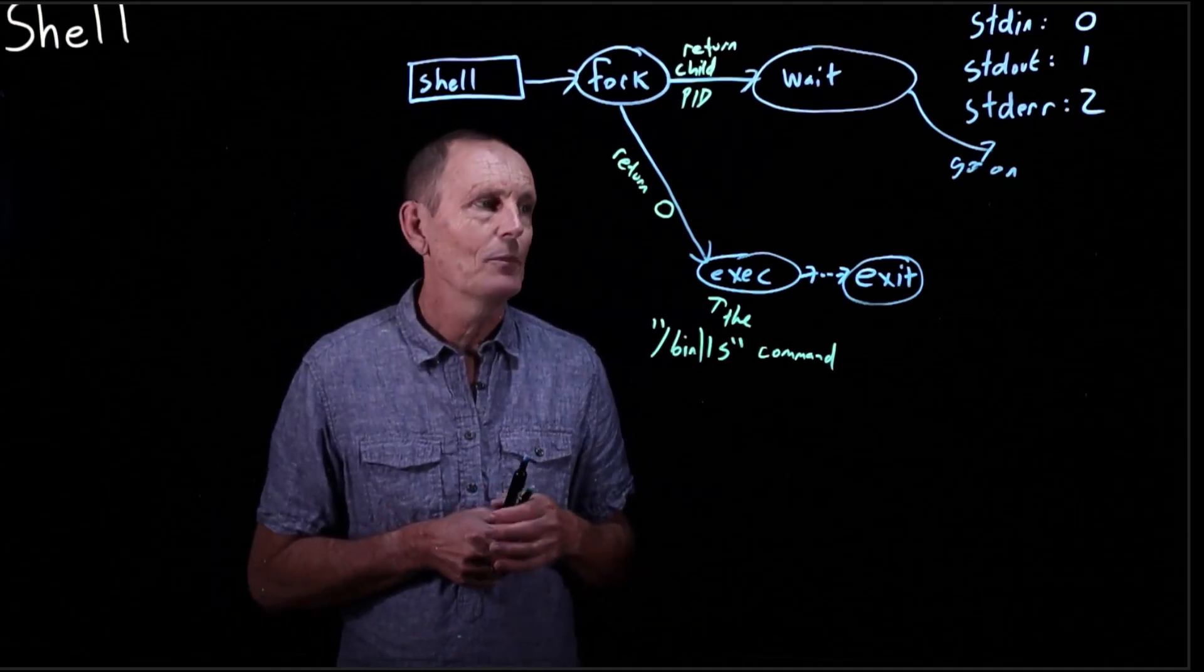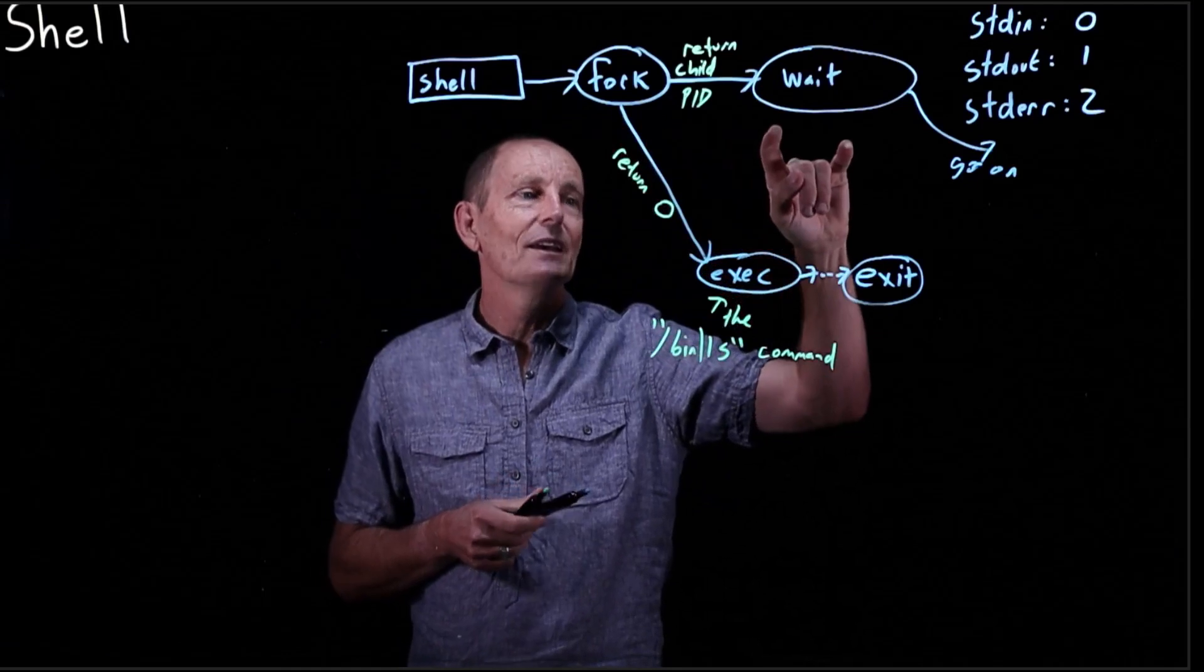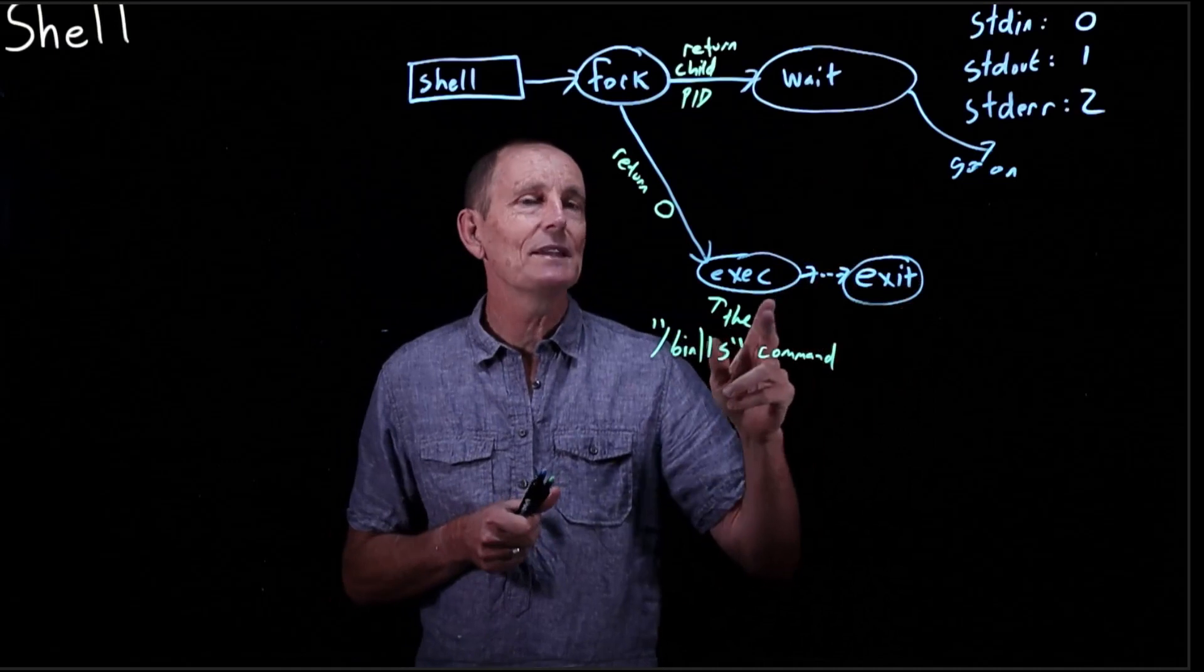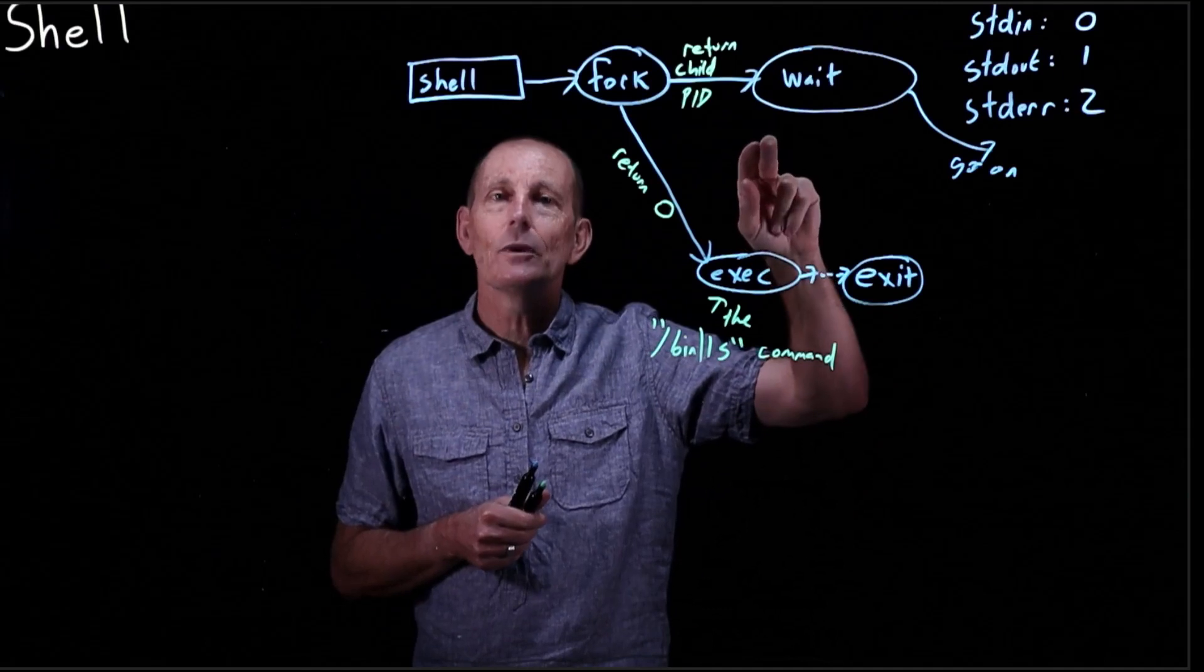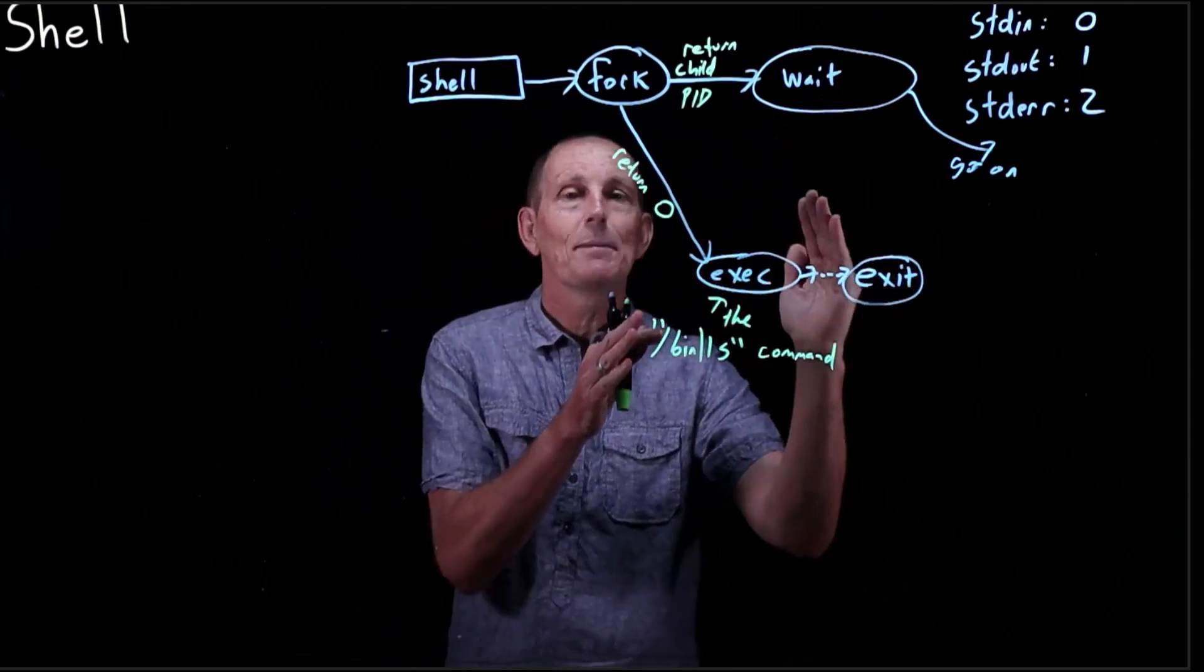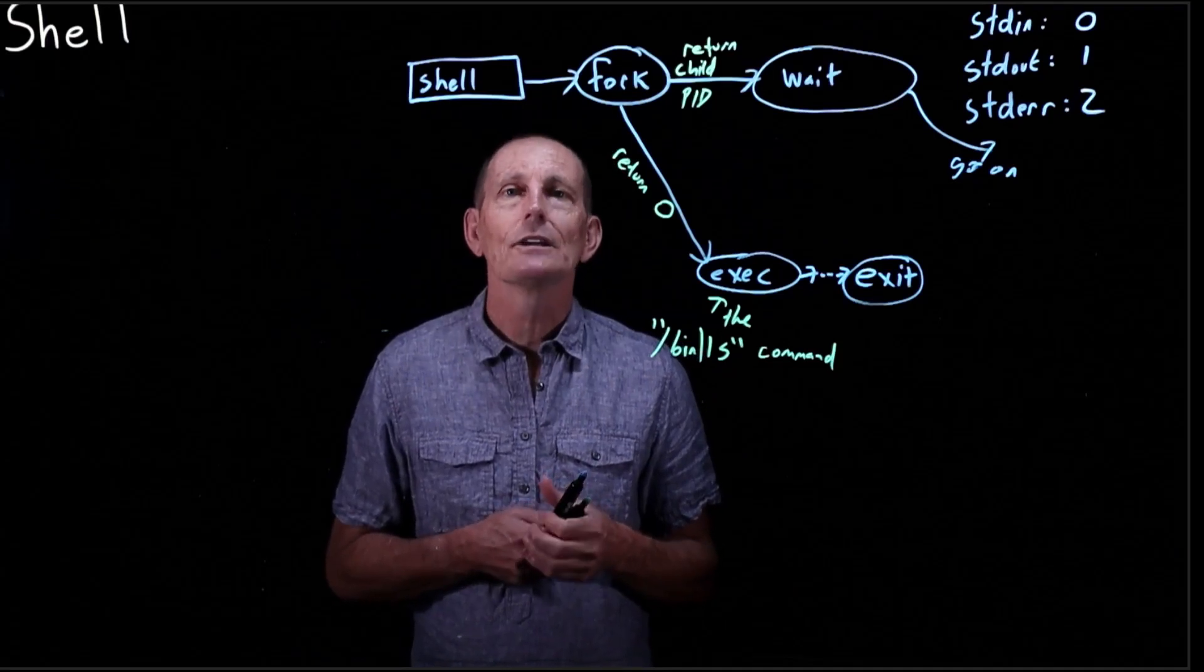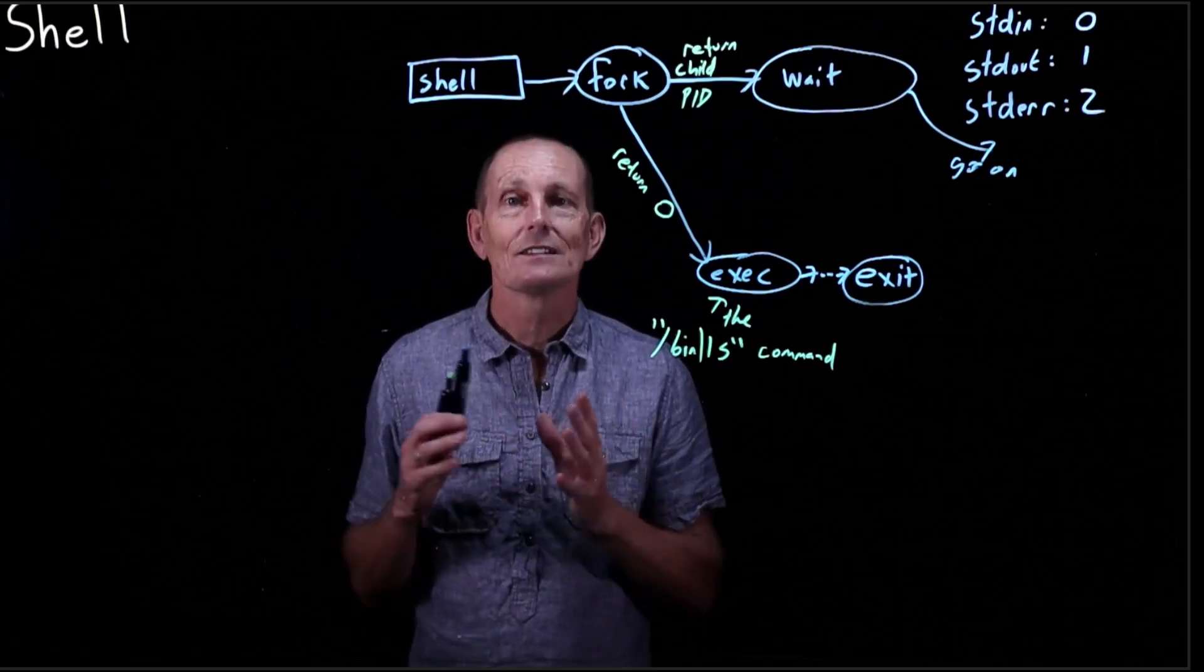So a couple questions happen. One, so if we go kind of in this order, shell, we fork, the shell then does a wait, and then the child process does an exec, and then an exit, that's fine. After the exit happens, then the wait will go on. But what happens if, let's say, the shell does a fork, and then before it has a chance to do the wait, the other process goes ahead, does the exec, does the ls, does the exit before the wait even happens. So what if the exit happens first? Does this all work? And the answer is yes, we're going to look at the machinery for how that happens. But basically you can do a wait, not only on processes that are going to exit in the future, but also do a wait on processes that have exited in the past.